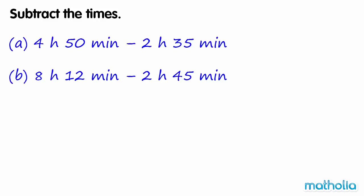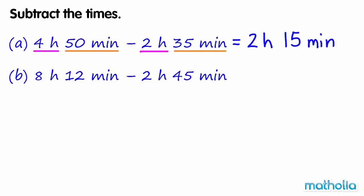Subtract the times. We need to find 4 hours 50 minutes minus 2 hours 35 minutes. Start by subtracting the hours: 4 hours minus 2 hours equals 2 hours. Next, subtract the minutes: 50 minutes minus 35 minutes equals 15 minutes. So 4 hours 50 minutes minus 2 hours 35 minutes equals 2 hours 15 minutes.